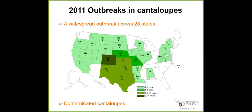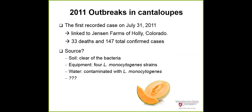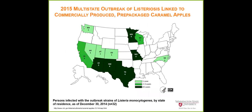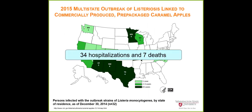Everybody probably still has fresh memory of the 2011 cantaloupe outbreak from Listeria — more than 140 cases and 33 deaths. Where did Listeria come from? It was environmental. When the FDA traced back, they found Listeria in the environment. That's why we say Listeria is ubiquitous in the environment and difficult to prevent. This year, in the beginning of the year, there was a Listeria outbreak on caramel apples — about 34 cases and seven deaths. The mortality of Listeria outbreaks is very high.